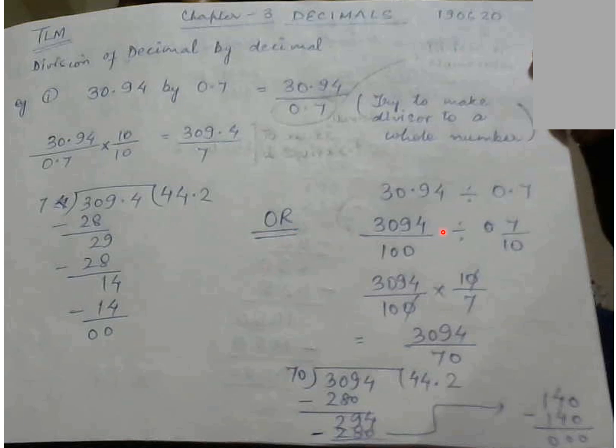Now for the same question one more method is there. 30.94 divided by 0.7. If you remember in the last class we have seen how to write the decimal into the fraction part. So 30.94 can be written as 3094 by 100.